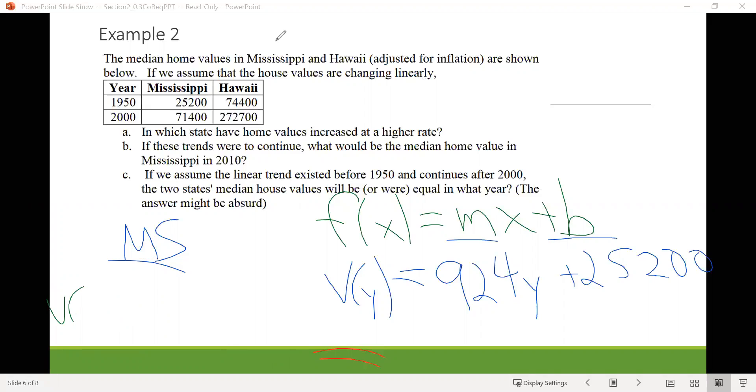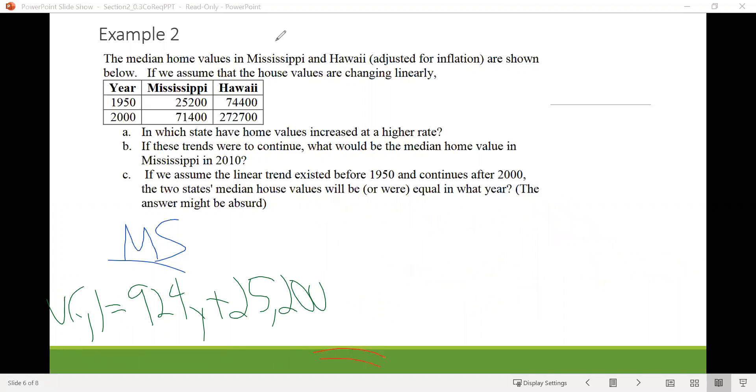And so we already know the one from Mississippi. So that's our V of Y equals 924Y plus 25,200. We also need to set up a similar equation for Hawaii. We have to recall the slope we got for Hawaii, which I don't recall, so I have to calculate it here really quickly. So it looks like that was 3966, so our V of Y here would be 3966Y plus, remember the value for B is the starting value. So the home prices for Hawaii in 1950, which in this case would be 74,400.